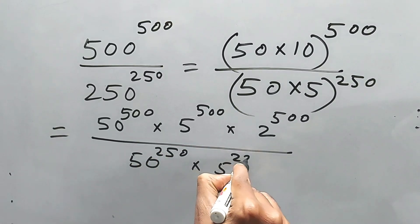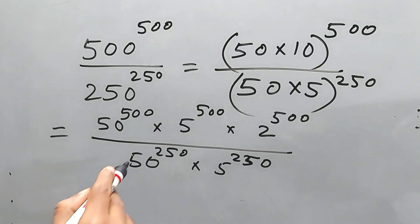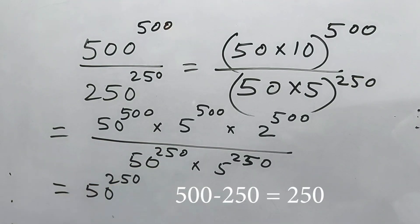Now in case of division, power will be reduced. It will be subtracted. Therefore this one will be 50 to the power 250. 500 minus 250 is 250, right?